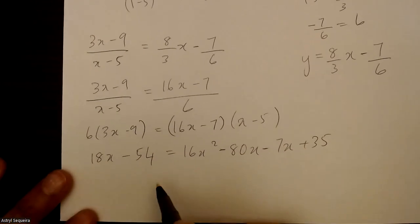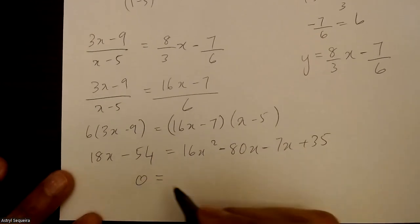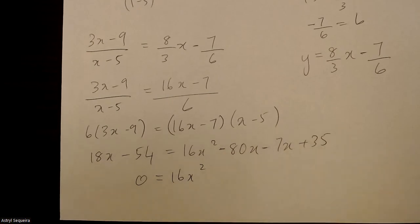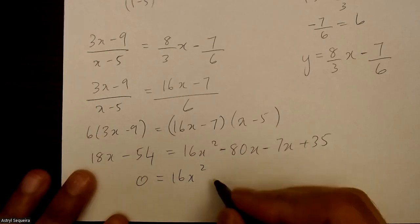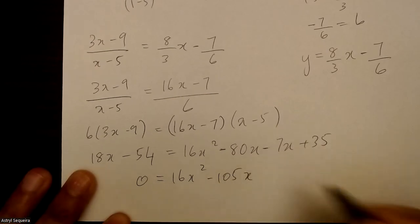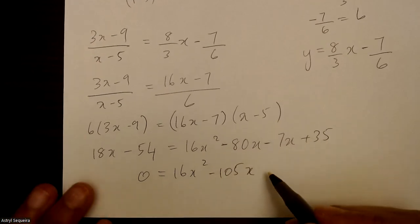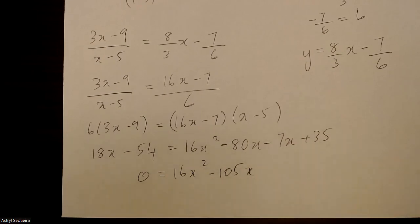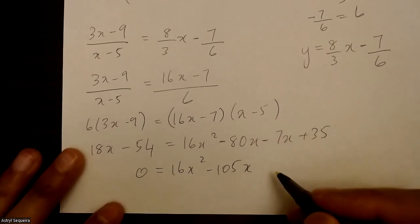16 times 5 is negative 80x minus 7x plus 35. And then I'll bring these two terms and subtract them on this side. So 0 equals 16x squared. Negative 87 minus 18 minus 105x. And then 35 plus 54 is just 89.